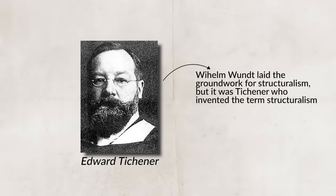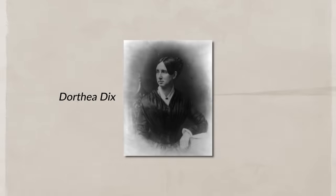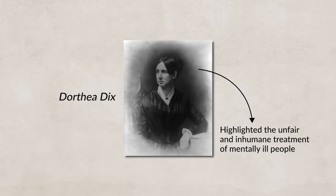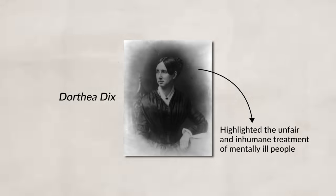Eventually, one of Wundt's students, Edward Titchener, created psychology's first theoretical approach: structuralism. Even though the first psychology laboratory was created in the late 19th century, there were still plenty of people before that who helped shape psychology. People like Dorothea Dix, who reshaped the medical field by highlighting the unfair and inhumane treatment of mentally ill people, sought to give people with mental illnesses the help that they needed, instead of just ignoring them.